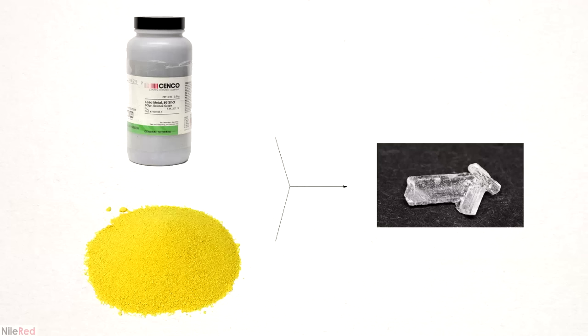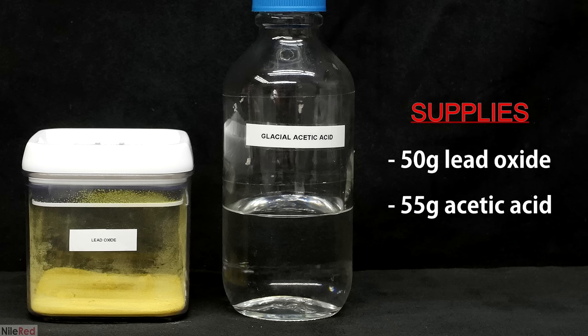So to make the lead acetate, we can do it in two main ways, either from lead oxide or from lead metal. I originally planned to only make it using one method, but in the end, I ended up doing both ways. To start things off, I'm going to show you the easier method, which is from the lead oxide.